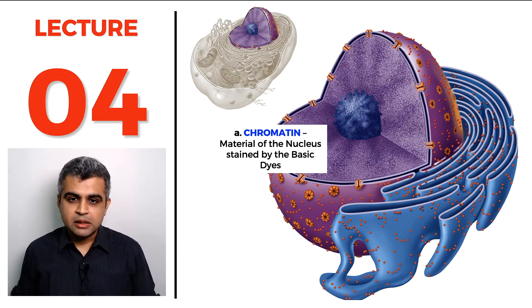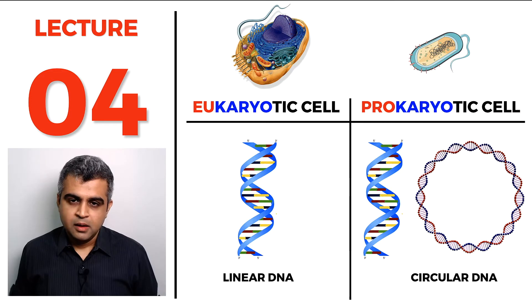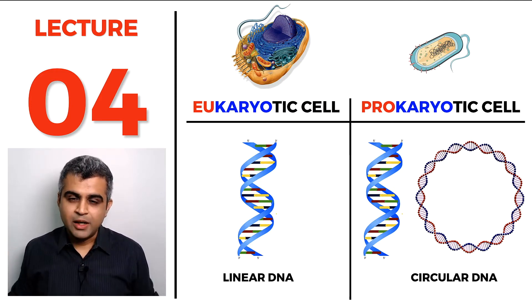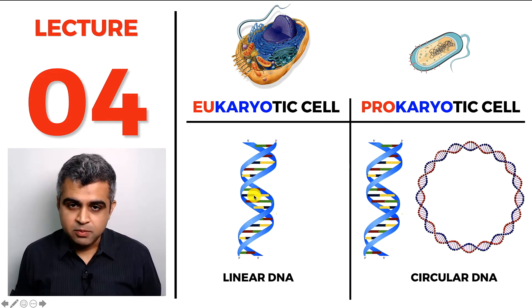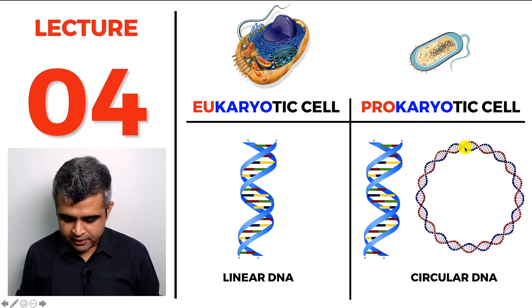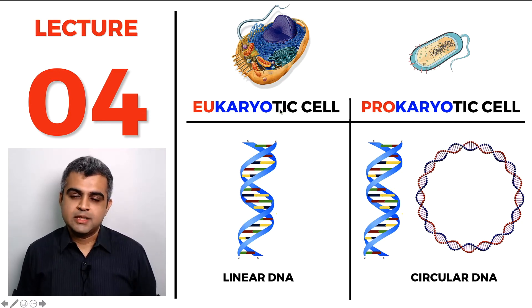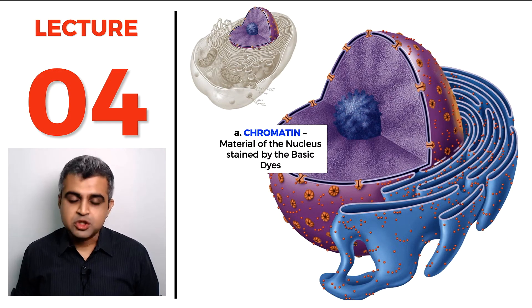The DNA in the chromatin can be of two types. Whether eukaryotic or prokaryotic, both have a DNA double helix. The difference is that in a eukaryotic cell the DNA is linear with visible ends, whereas in a prokaryotic cell the two ends are connected, making it appear circular. So eukaryotic cells have linear DNA and prokaryotic cells have circular DNA.